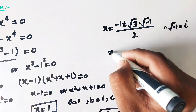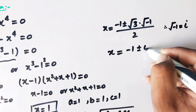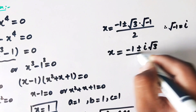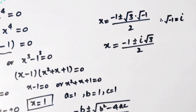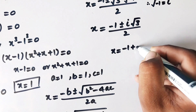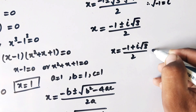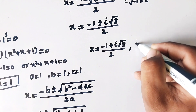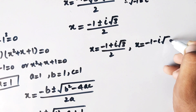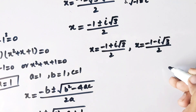Since the square root of minus 1 is equal to i, the imaginary number, we write x equals minus 1 plus or minus i times the square root of 3, over 2. So the two complex values are: x equals minus 1 plus i times root 3 over 2, and x equals minus 1 minus i times root 3 over 2.